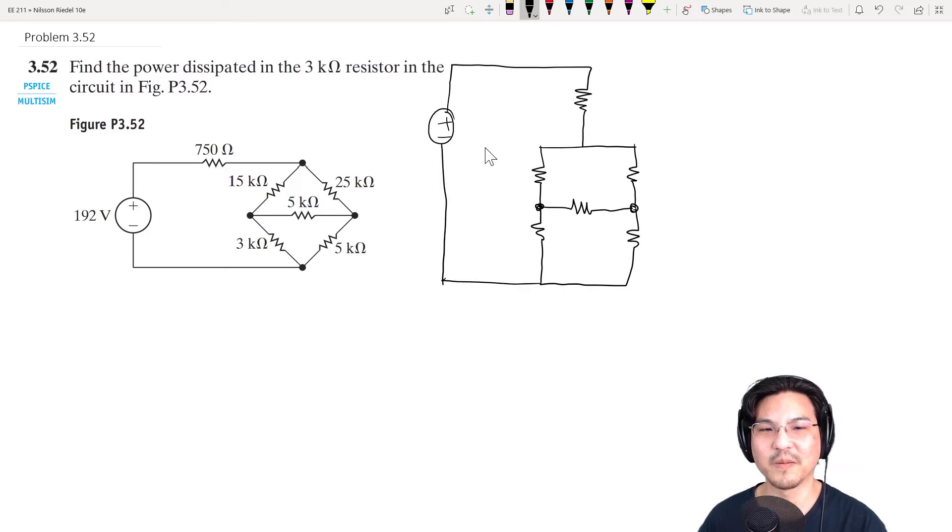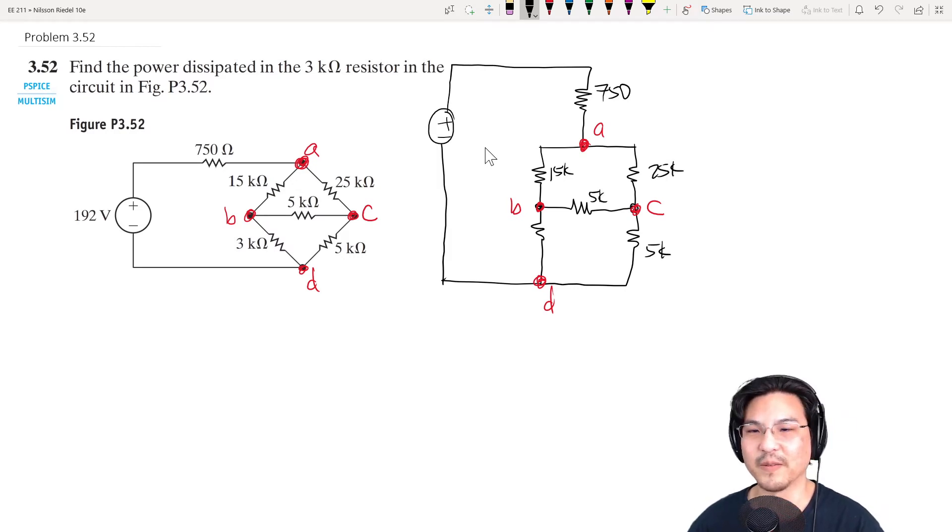Let me label these. So let's say if I call this node A, that's right here. And then if I call this node B, that's here. And I'll call this C, which is here. And I'll call this D, which is this entire bottom. Let me label the resistors. So 15k, 5k, 25, 5, and 3.